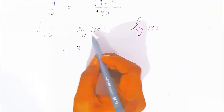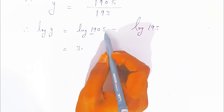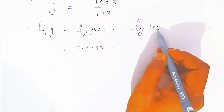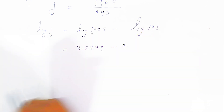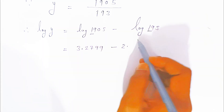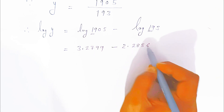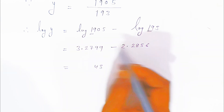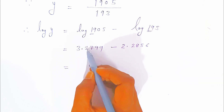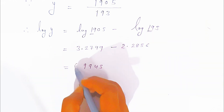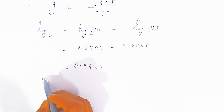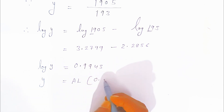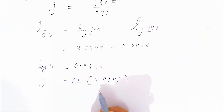For log 193: three digits, so the characteristic is 3 − 1 = 2. In the log table, row 19, third column, you get 2856. Subtracting: 3.2799 − 2.2856. Working through the subtraction gives 0.9943. So log y = 0.9943, meaning y = antilog of 0.9943.